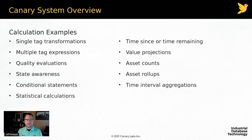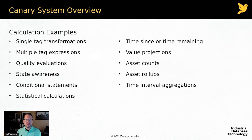Let's talk about some examples of these calculations. Something as simple as a single-tag transformation: a value is in Celsius and I want to convert it to Fahrenheit. Or a multiple-tag expression: three pumps, three flows — let's output an average flow tag. We can also do quality evaluations: if data quality is good, take this action; if bad, take this action. In the last hour, what percentage of my data quality was good?